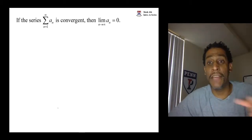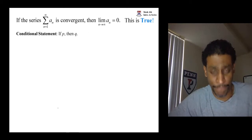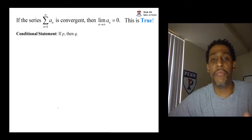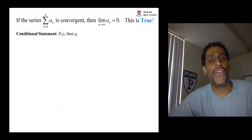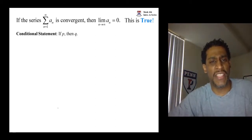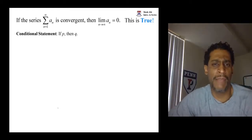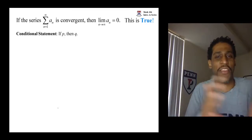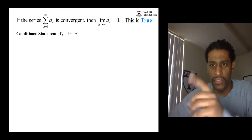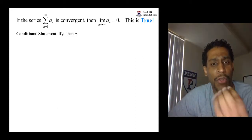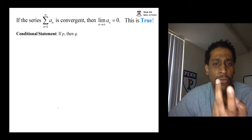What we have here is an if-then statement — a classic logical statement called a conditional statement. If P then Q is a standard way to say it, where P and Q represent statements themselves. Most mathematical proofs are in this format. This is a true statement, and what you can do with it is alter it.